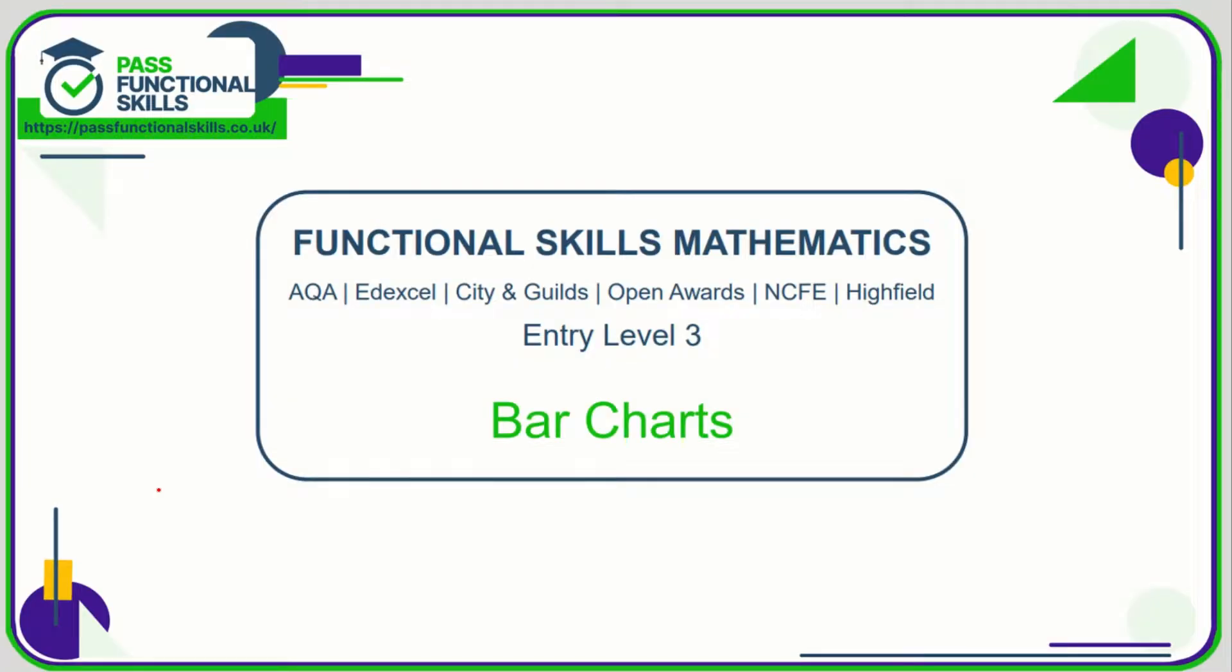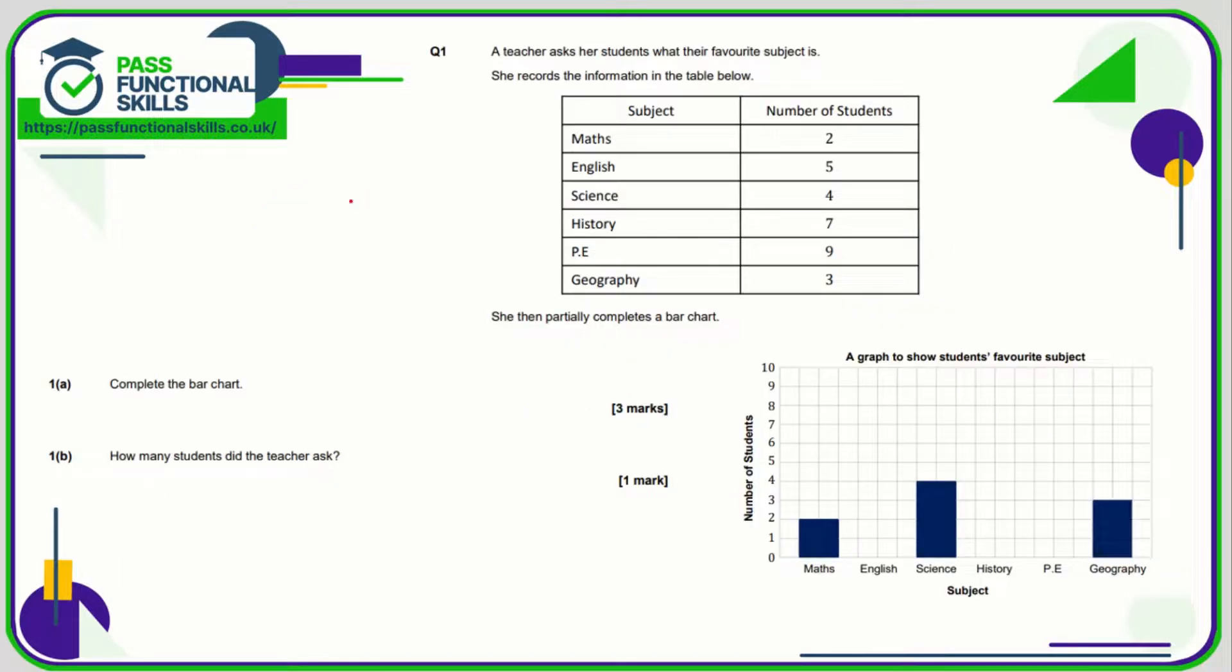Let's take a look at these bar chart questions. First of all, we need to complete the bar charts. We've got a table of values here. We can see that Maths, Science, and Geography has already been done. So English is five, English is going to be in here somewhere.